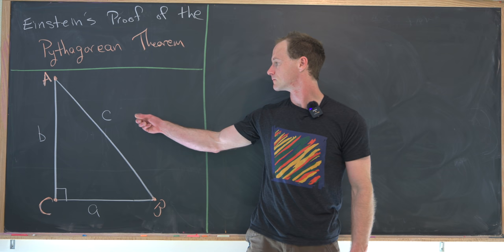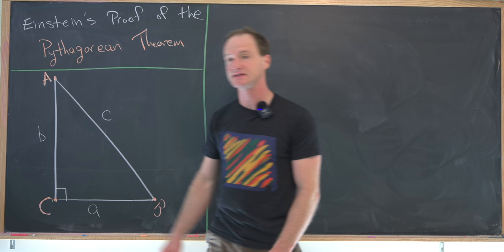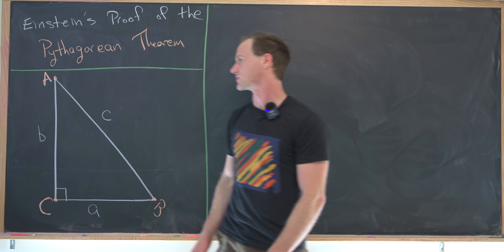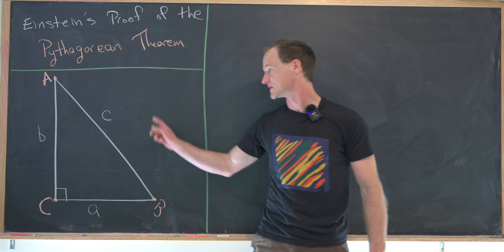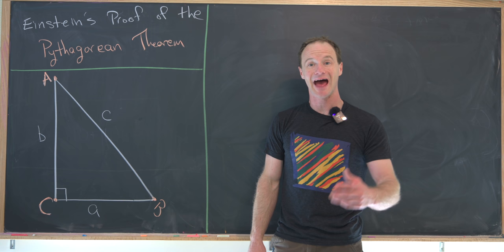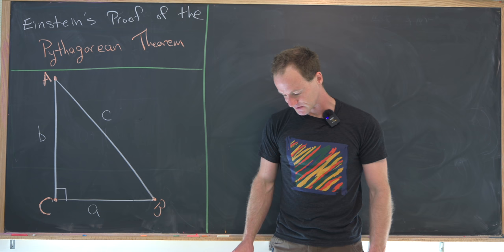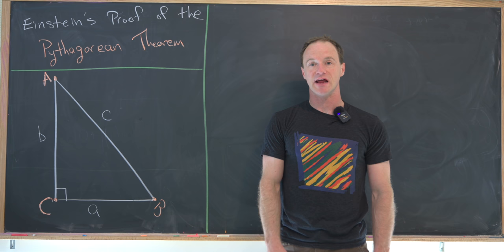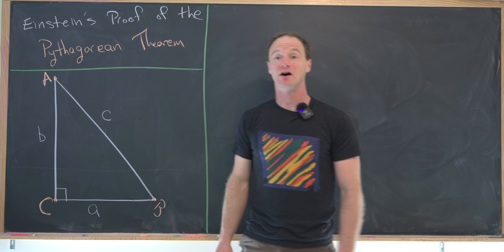Let's get a triangle on the board so we can look at Albert Einstein's proof. We have our right triangle A, B, C where the right angle is at vertex C. The opposite sides are labeled: little a opposite vertex A, little b opposite vertex B, and little c opposite vertex C. Einstein's proof relies on adding a new line segment into this picture and making arguments about similar triangles. We'll draw a line segment from C to line segment AB that intersects at a right angle, and label the angles alpha and beta.